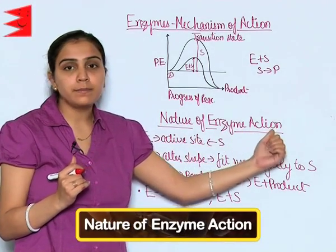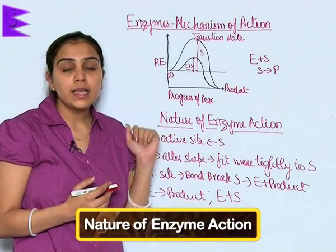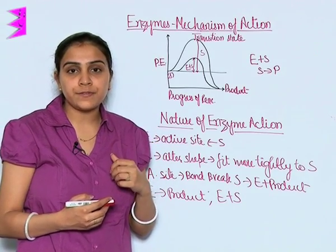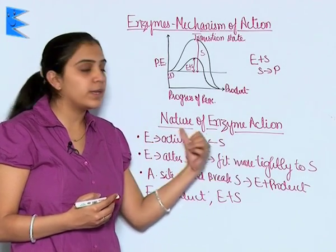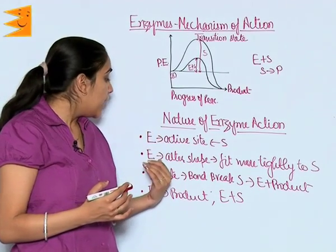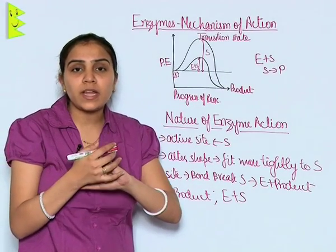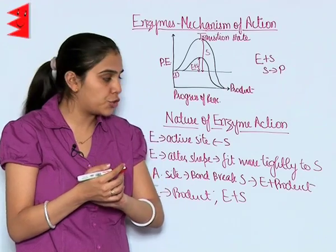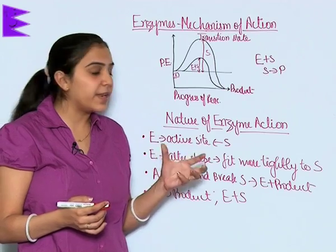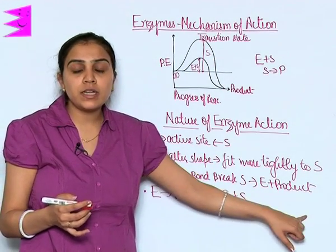Nature of Enzyme Action — the various steps of enzyme action: Enzymes have active sites to which the substrate binds. In the next step, the enzyme alters its shape to fit more tightly with the substrate. Then, the active site breaks the bonds of the substrate and converts it into product.